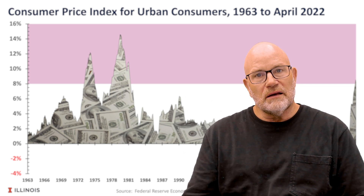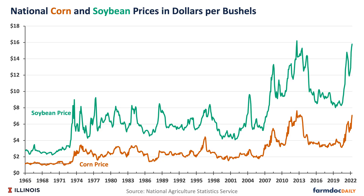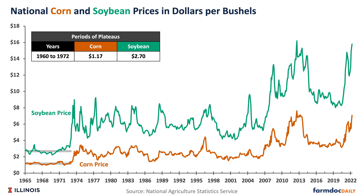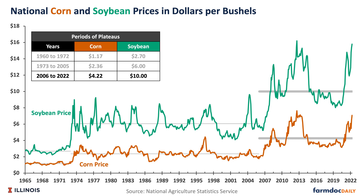While we look at inflation and then commodity prices, we see very different patterns. Commodity prices tend to have long periods where they don't trend up or down and vary around a plateau. That plateau for corn was from 1960 to 1972 at $1.17, and then it increased in 1973 to $2.36. Improving exports led to that higher plateau. We saw corn prices maintain that $2.36 plateau until roughly 2006, when again we saw commodity reach a new plateau of approximately $4.22.